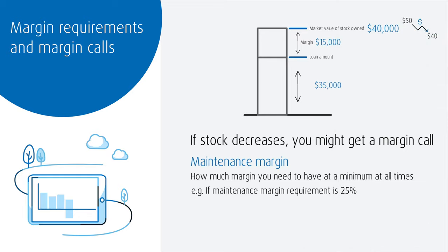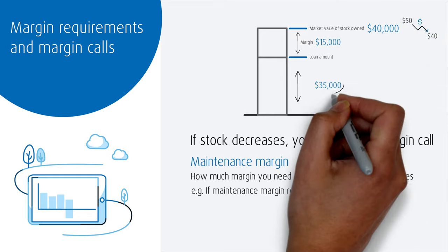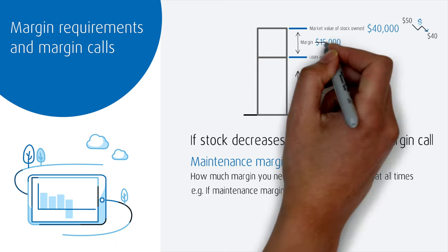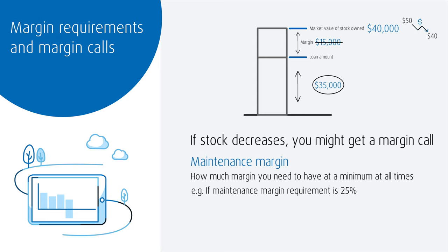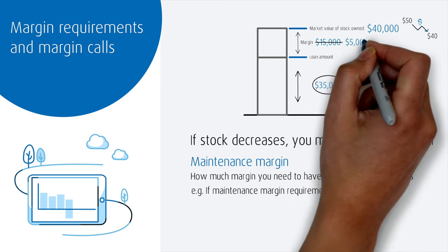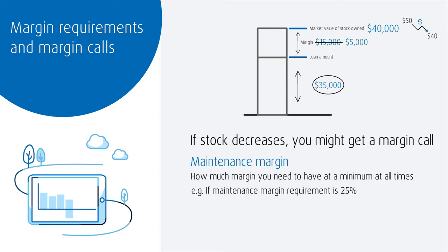You still owe the brokerage $35,000, and if we subtract this from $40,000, we are left with only $5,000 as your margin.